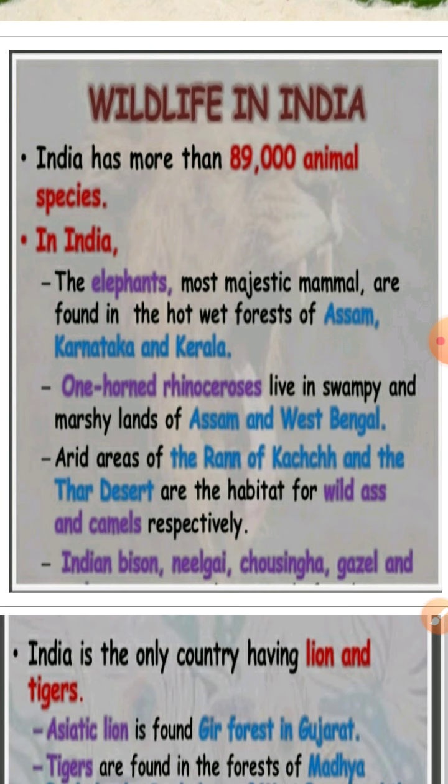The arid area of the Rann of Kutch exists in Gujarat. The dry Thar Desert in Rajasthan is the habitat for wild ass and camels respectively.